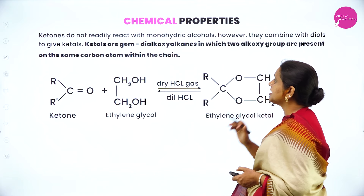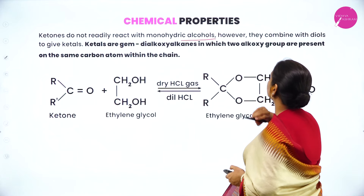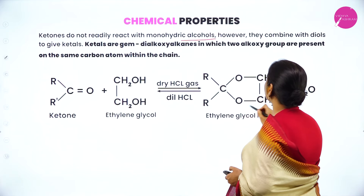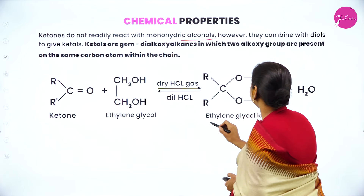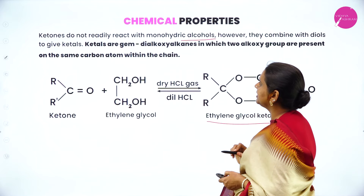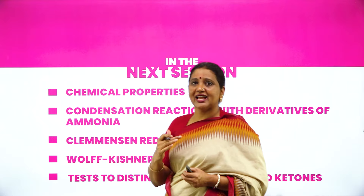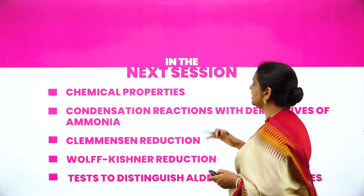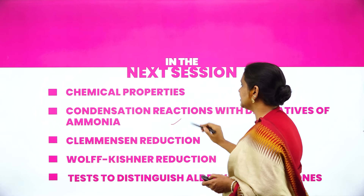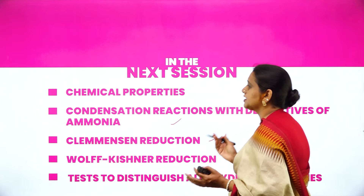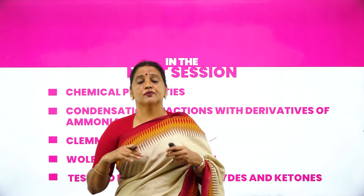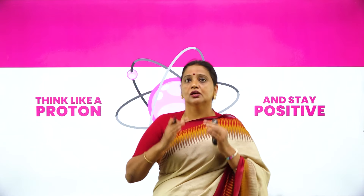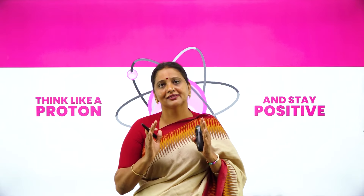Ketones do not react with monohydric alcohol, but they react with dihydric alcohol to form ethylene glycol ketal, where two alkoxy groups are attached to the same carbon. These are the reactions covered in session 2. In session 3, I will cover other chemical properties of aldehydes and ketones such as condensation reactions and Clemmensen reduction, and distinguish between aldehydes and ketones. Goodbye, take care, have a nice day, bye-bye, thank you.